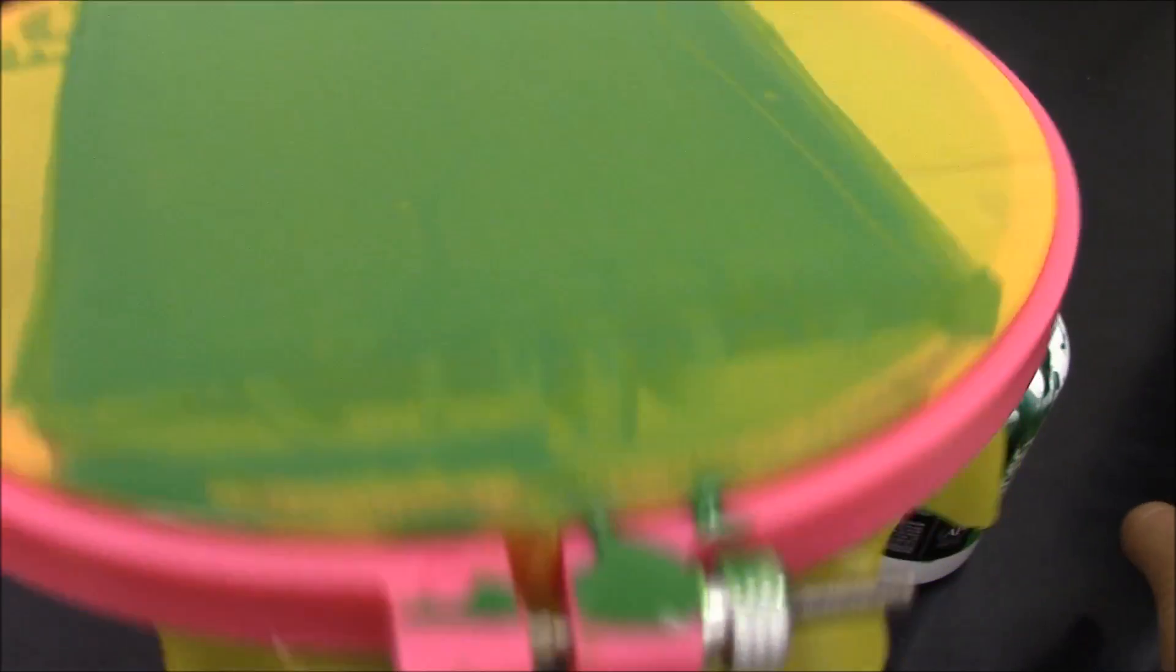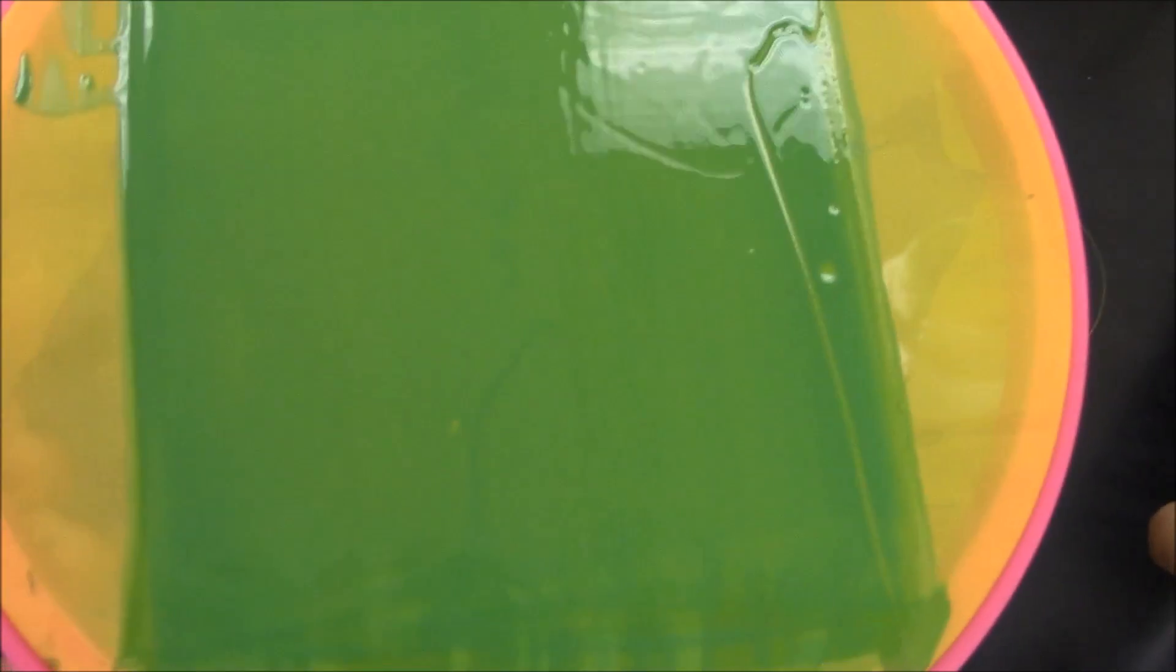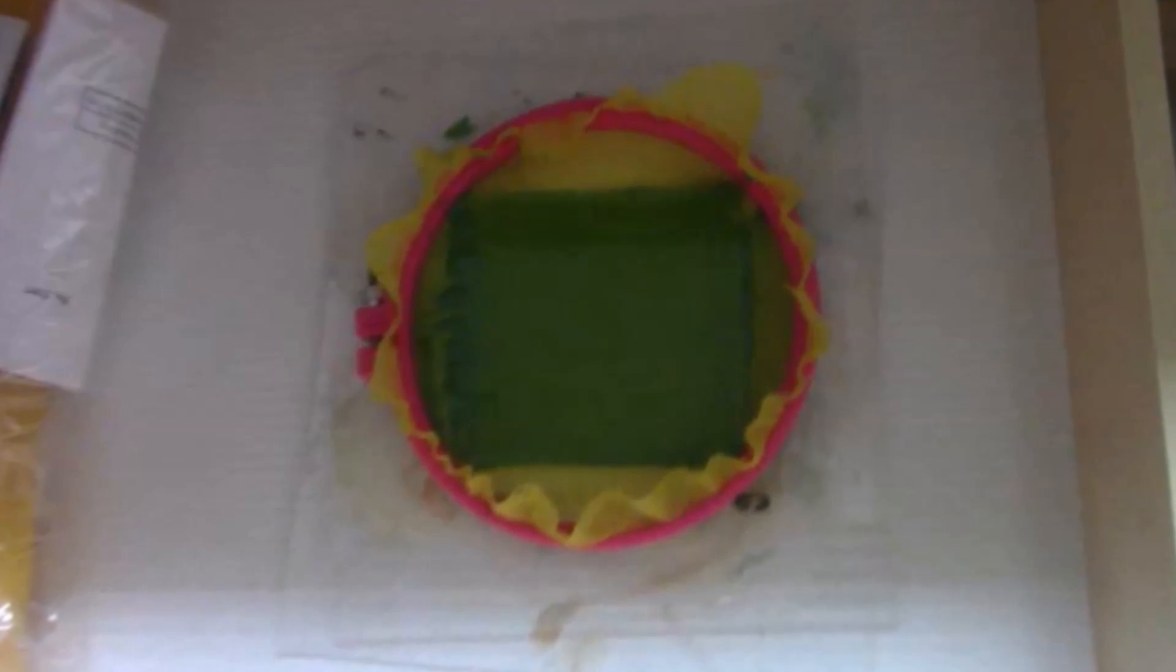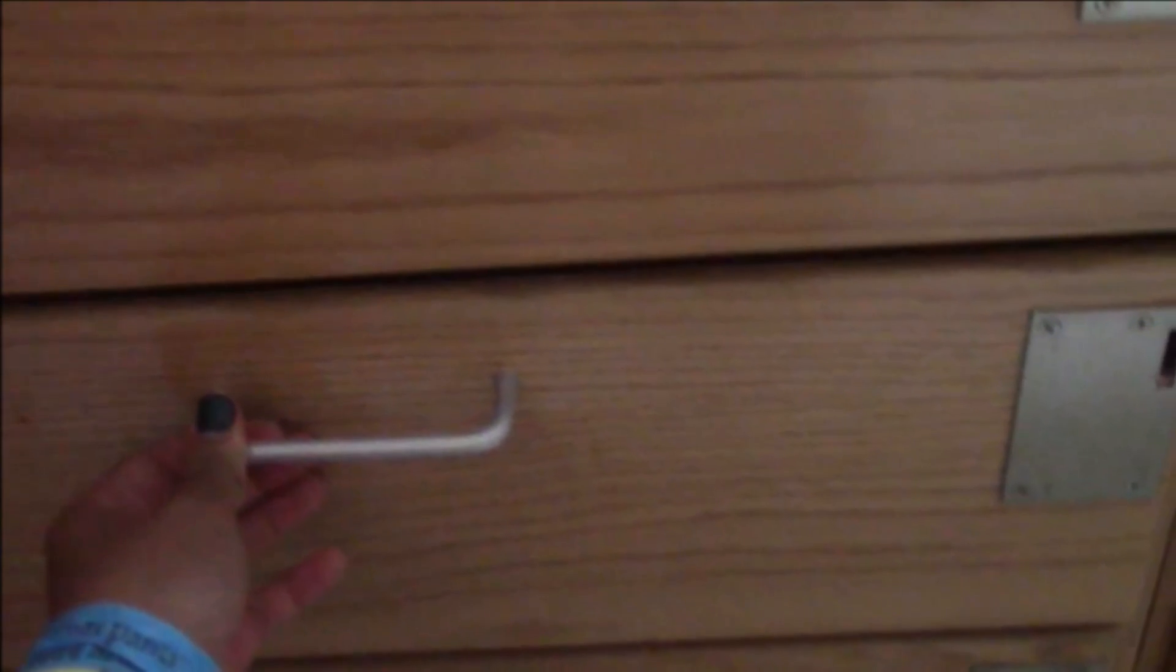As you can see from this shot, the front of the screen has a thicker layer of emulsion than the back does. Find a dark space, such as a drawer, to put the screen in while the emulsion dries. Put the screen face down using something to prop up the frame so that the emulsion does not touch any surfaces. Let the emulsion dry overnight.